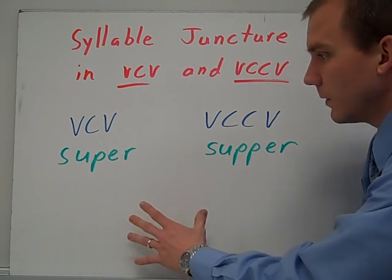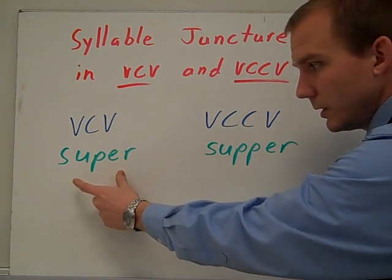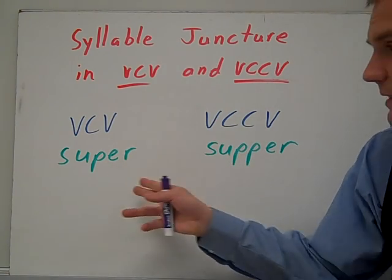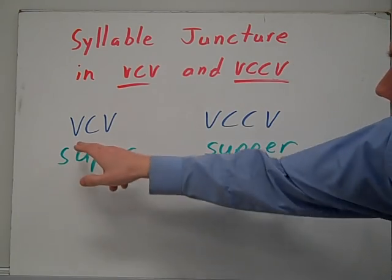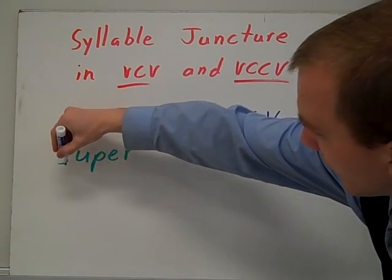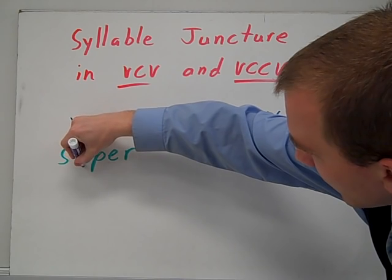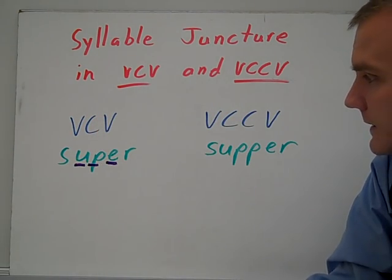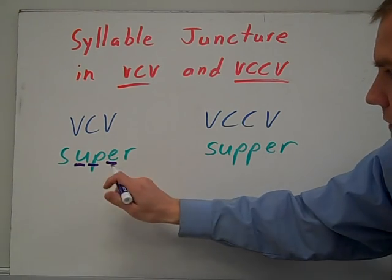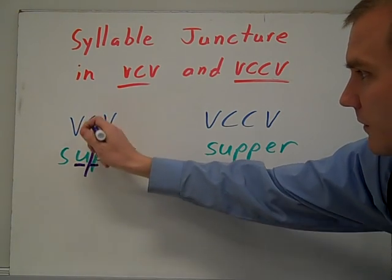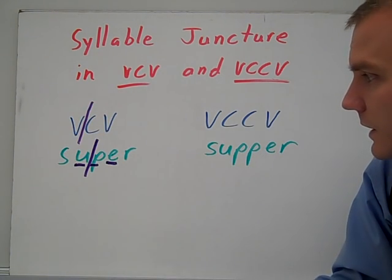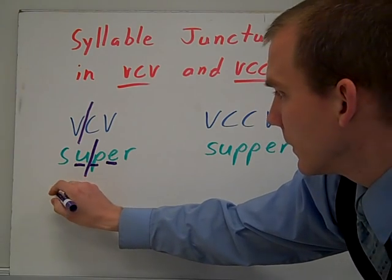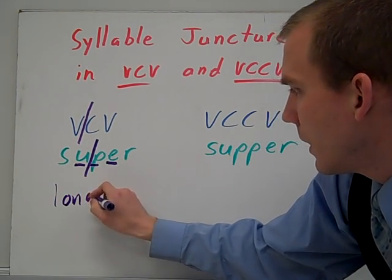A great example is the word 'super' and 'supper.' You can use this pattern to almost tell the difference, because sometimes I get confused with these two as well. You have your vowel-consonant-vowel — U-P-E — and that says 'super.' So the juncture is right between the vowel and the consonant, and you hear 'su,' that is a long U, so you're looking at long sounds.